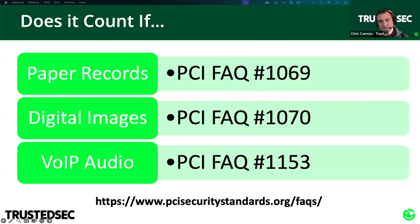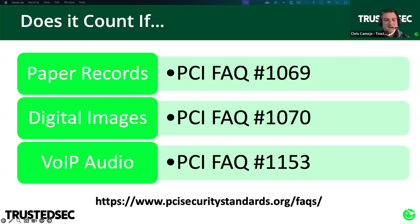Some other misconceptions: organizations will often incorrectly omit certain payment processes because they think PCI only applies to electronic account data, or think digital scans of documents don't count because they're images rather than text data, or they don't think about voice-over-IP audio. These are all in scope. According to PCI and the FAQ numbers listed, paper documents, digital images, and voice-over-IP audio are absolutely in scope for PCI DSS.